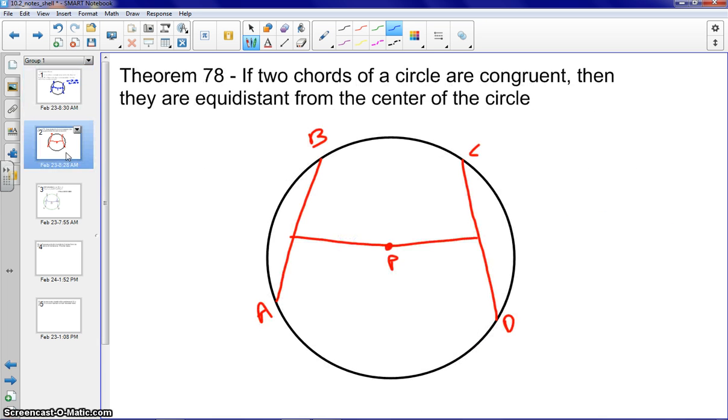Using that same type of diagram there, if we have two chords of a circle are congruent, then they are equal distance from the center of the circle. So it's just the reverse of what we just did. So in our case here, if we have AB is congruent to CD, then PX would be congruent to PY. So the reverse.